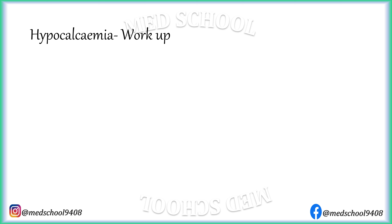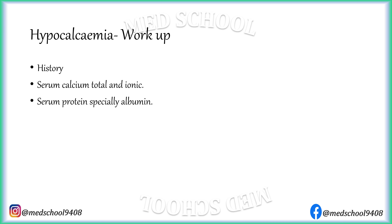As with other electrolyte abnormalities, history is the most important factor to uncover the underlying cause. Other tests to be conducted are serum calcium, total ionic calcium, serum protein — specially albumin — serum parathyroid hormone level, and serum vitamin D3 level. ECG may show QT prolongation.